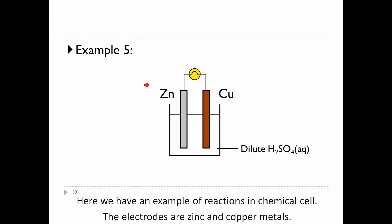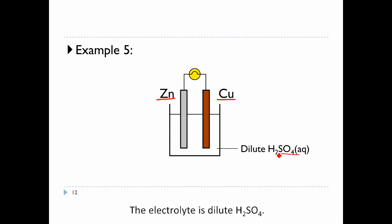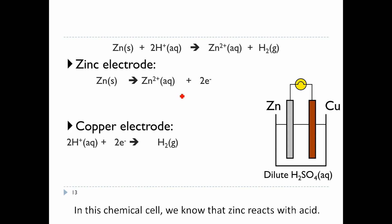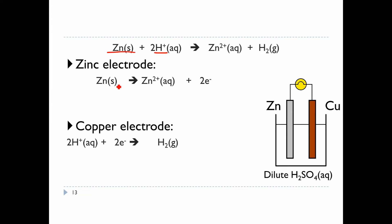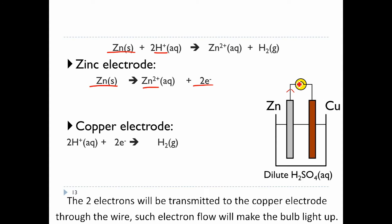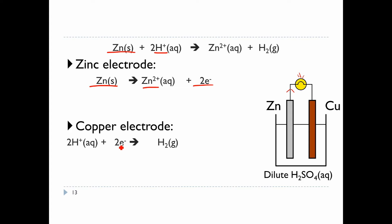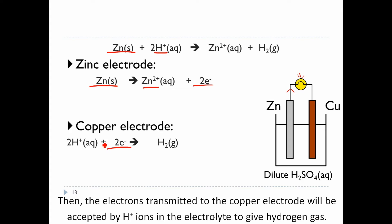Here is an example of reactions in a chemical cell. The electrodes are zinc and copper metals, and the electrolyte is dilute H2SO4. In this chemical cell, zinc reacts with acid on the zinc electrode to give Zn2+ ions and releases two electrons. The two electrons are transmitted to the copper electrode through the wire — this electron flow makes the bulb light up. Then the electrons at the copper electrode are accepted by H+ ions in the electrolyte to give hydrogen gas.